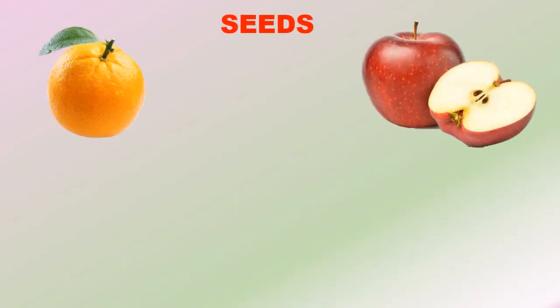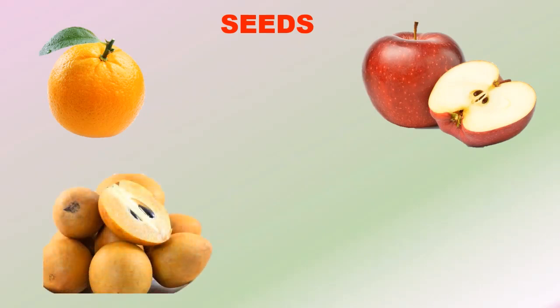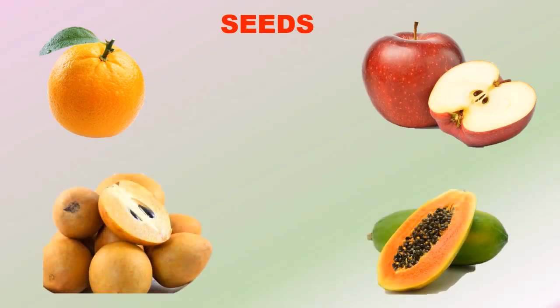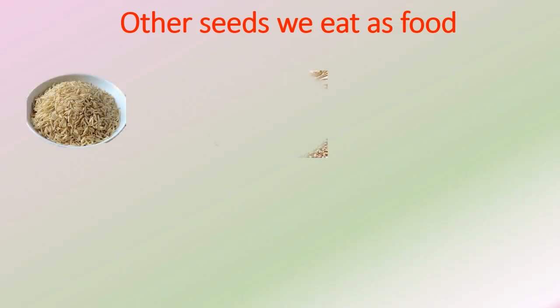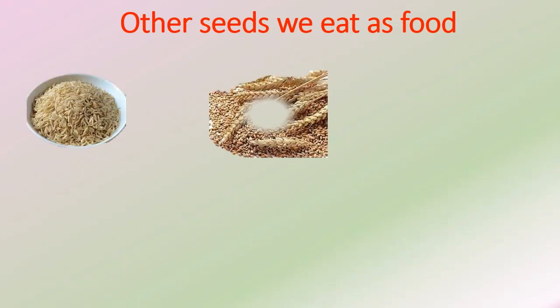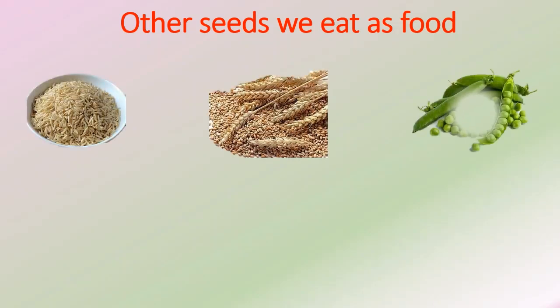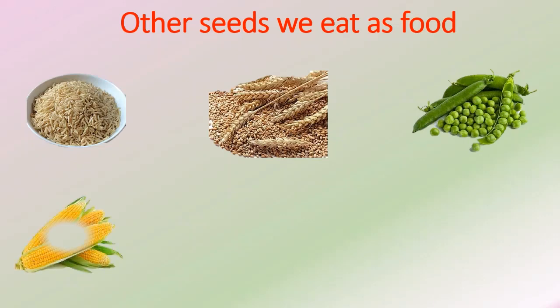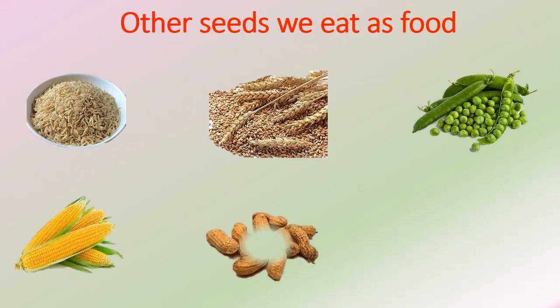We do not eat the seeds of fruits such as orange, apple, chikoo and papaya. Some other seeds which we use as food include rice, wheat, peas, corn, peanuts and almonds.